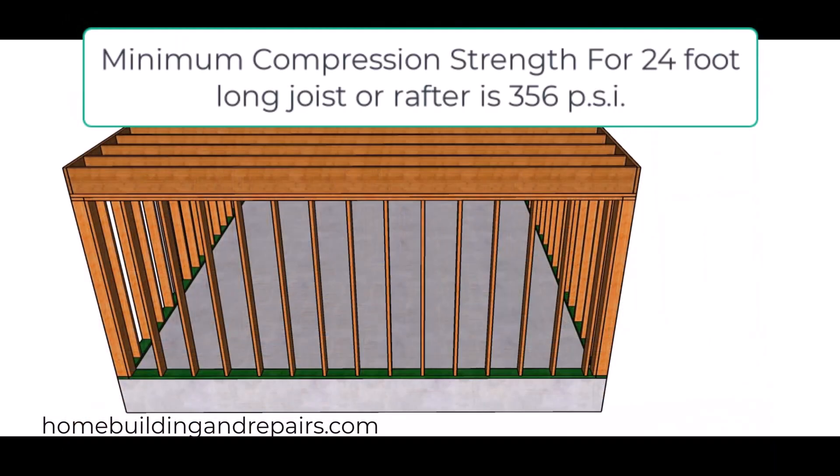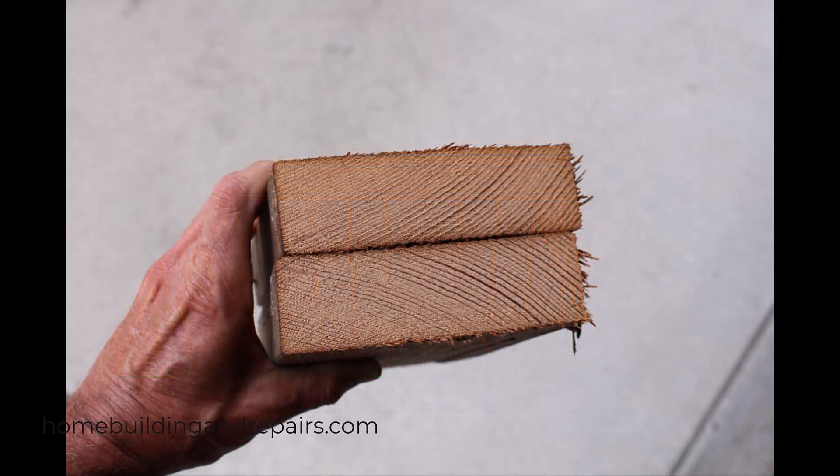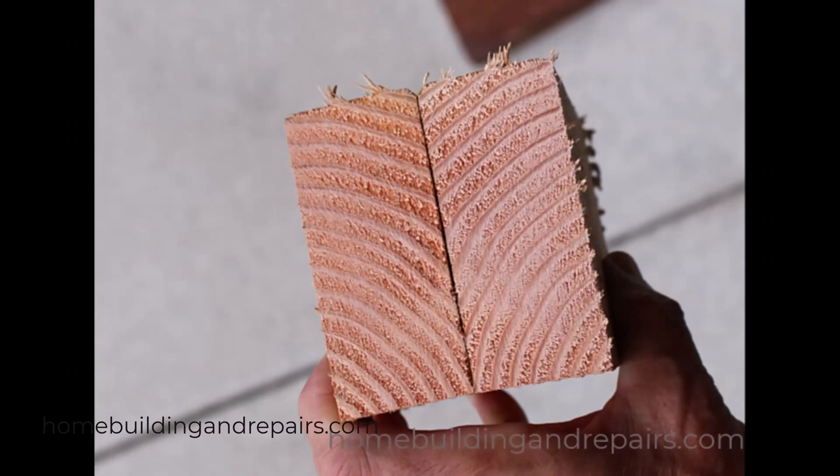And if the minimum I need for a 24-foot floor joist is only 356 PSI, then I don't think it's really going to make that big of a difference whether I use old growth or new growth lumber.